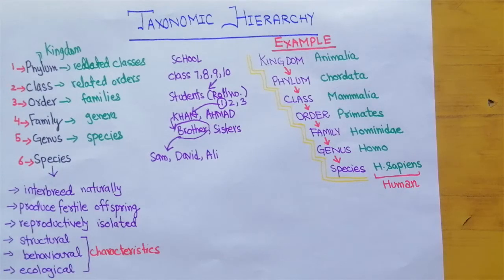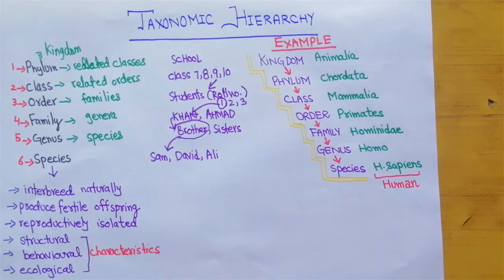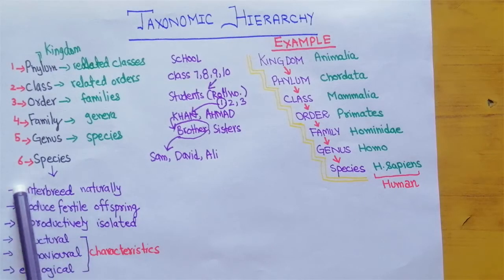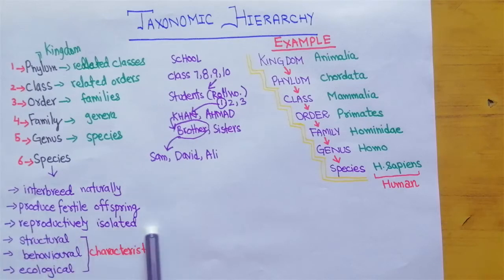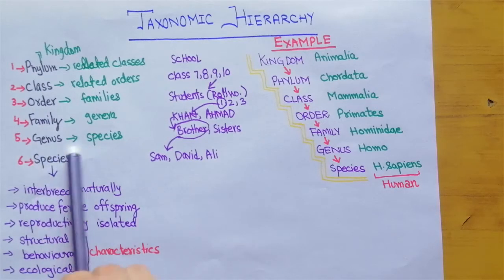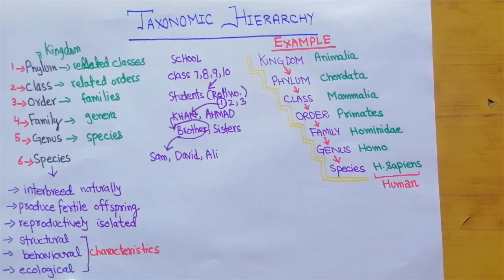The lowest level of taxonomic hierarchy is species. Species are defined as organisms that interbreed naturally and produce fertile offspring — meaning those offspring can further reproduce. Species are also reproductively isolated, meaning they do not breed with other species. Additionally, species are structurally, behaviorally, and ecologically distinct from one another. This is known as natural breeding.